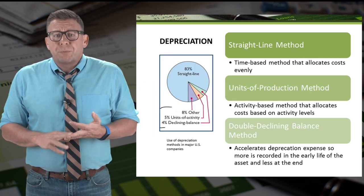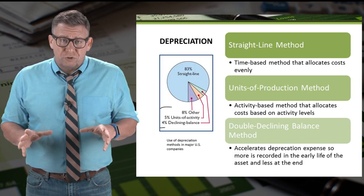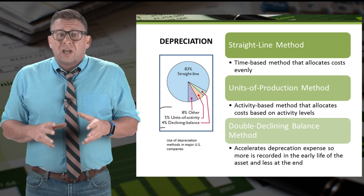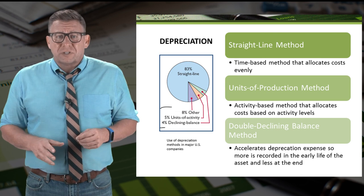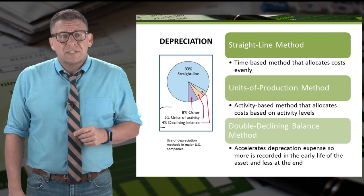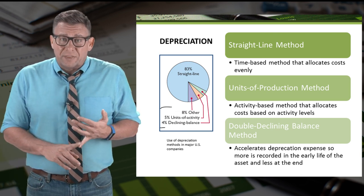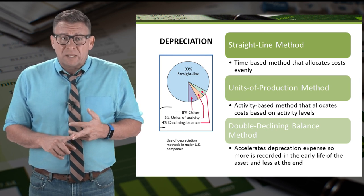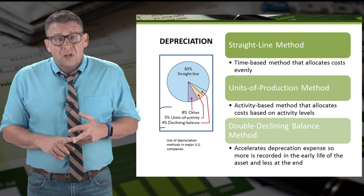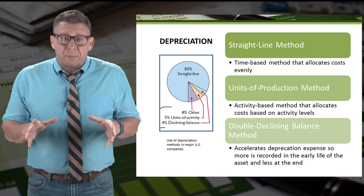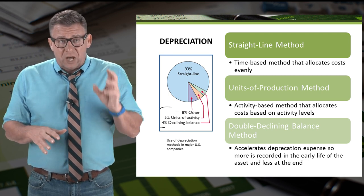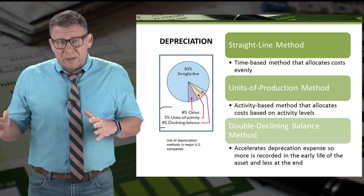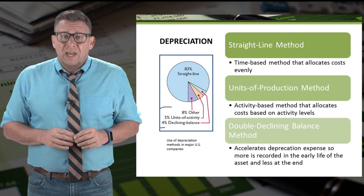There are three primary methods of calculating depreciation expense. Although not inclusive, these methods are used by more than 92% of major U.S. companies. They are the straight-line method, the units of production method, and the double declining balance method. The straight-line method is the most common — it takes the cost of a plant asset and spreads it evenly to expense over the asset's useful life.